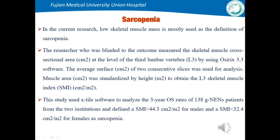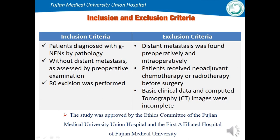In this study, low skeletal muscle mass is used as the definition of sarcopenia. We collected 138 patient cases from two institutions and defined SMI less than 44.3 for males and SMI less than 32.4 for females as sarcopenia.